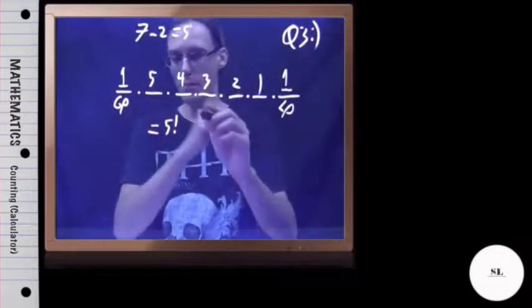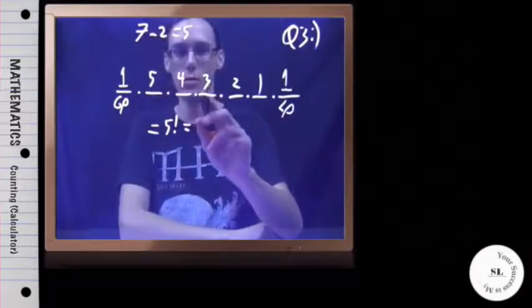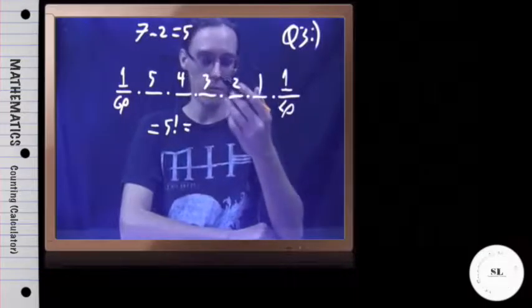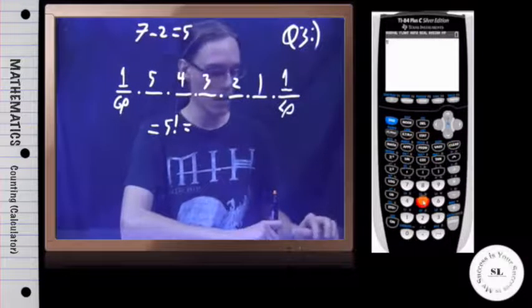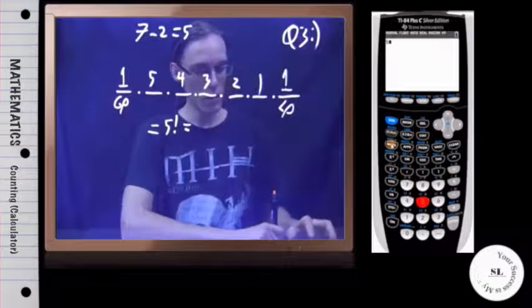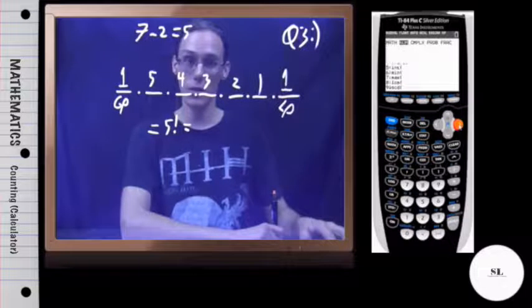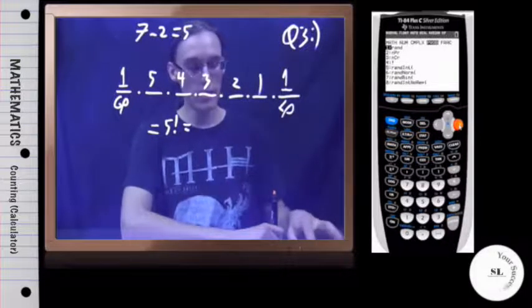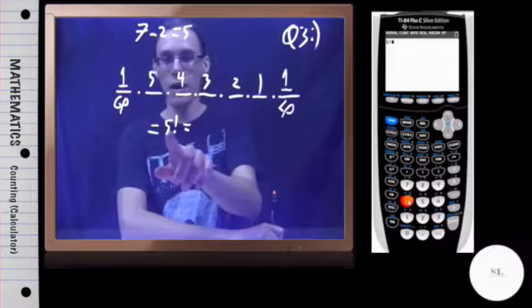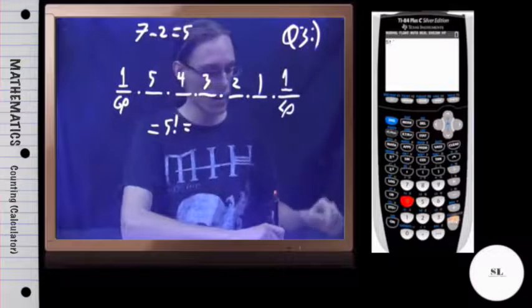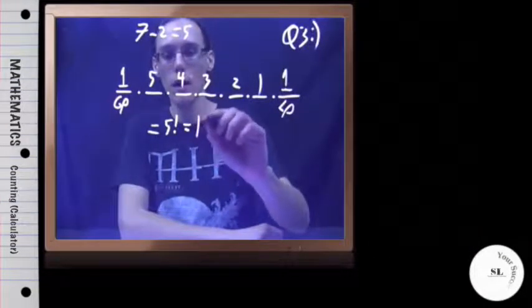So, remember, five factorial just means five times four times three times two times one. If we put that in the calculator, we hit five, after turning it on, of course. We hit five. Then we hit the math button right below the green one, go over to the PRB section once you're in the menu, and it's option number four. So I'll hit four, and I should see five exclamation point on the screen. I'll hit enter.